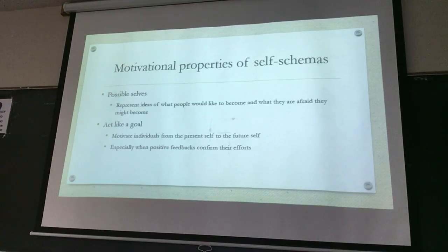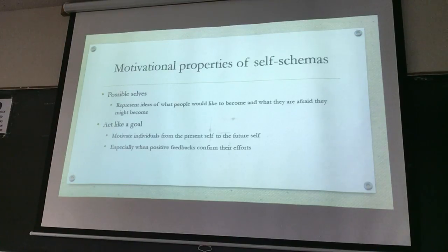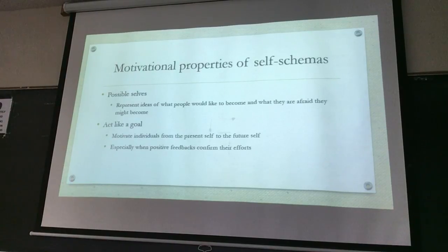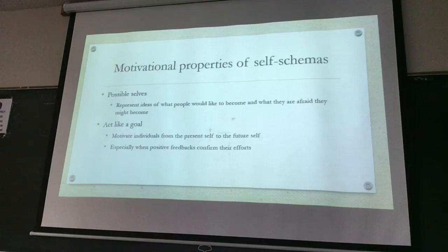Possible self is like a goal. In the chapter on goal setting, we learned that a goal is a desired outcome you want to get. Possible self motivates individuals to behave and try hard to move from the present self to the future self. Especially when positive feedback confirms their efforts, they will try harder. But if there are negative feedbacks, they may abandon the possible self and build another possible self — a new destination — if the negative feedback is too strong.